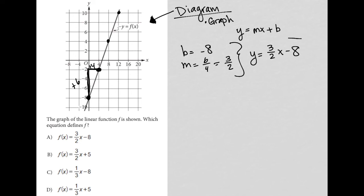So in essence, we've already done the work for that because we already found the equation, and it looks like that's just going to be answer choice A, right? f of x, which is the same thing as y. Let's not let that confuse us. f of x and y are the same thing. So f of x equals 3 halves x minus 8. So choice A is the correct answer.